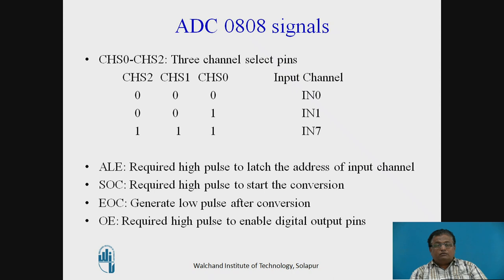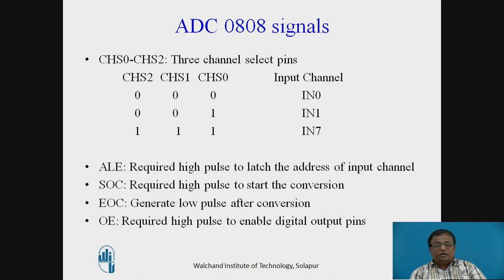There are eight analog input channels from IN0 to IN7, and their addresses are as follows: if all three channel select lines are 000, input channel 0 is selected; for 001, input channel 1 is selected; and if all three lines are 111, input channel 7 is selected. ALE requires a high pulse to latch the address. To start conversion, send a high pulse on SOC. After conversion, ADC generates a low pulse on EOC. Then send a high pulse on OE to enable the digital output pins.